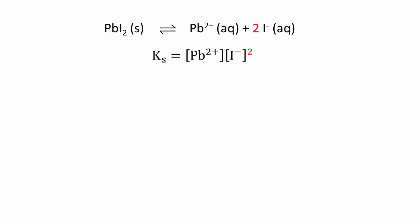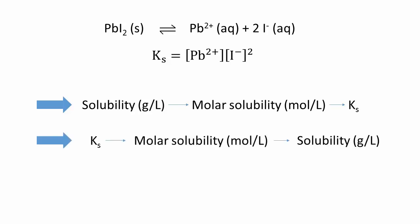When doing calculations, we always assume that the solution is saturated, and we can go from a solubility expressed in grams per liter to moles per liter, and finally work our way to a solubility product. Alternatively, we can go in the opposite direction, from a solubility product to a molar solubility, and finally to a solubility.